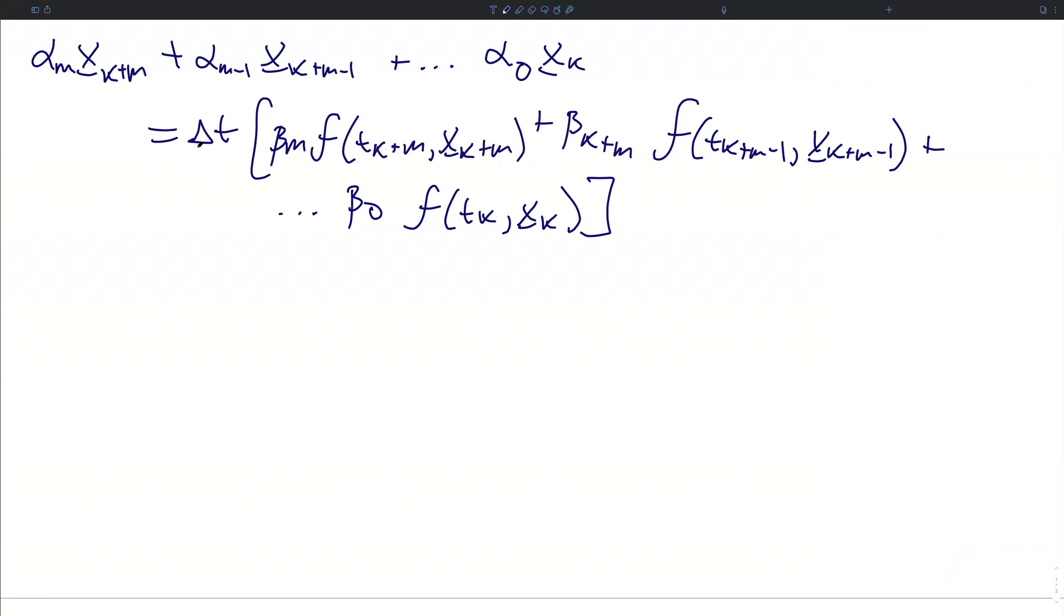and you set that equal to your time step Δt times a set of β constants multiplying the function evaluations at the equivalent time steps. This is literally just taking the exact same thing that we did with forward Euler, but generalizing it to use an arbitrary number of time points along your trajectory history.